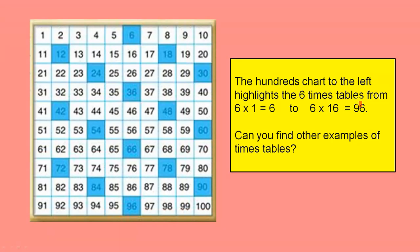The hundreds chart to the left highlights the 6 times tables from 6 times 1 equals 6 to 6 times 16 equals 96. Can you find other examples of times tables? 6 ones are 6, 6 twos are 12, 6 threes are 18, 6 fours are 24, 6 fives are 30, and so on.